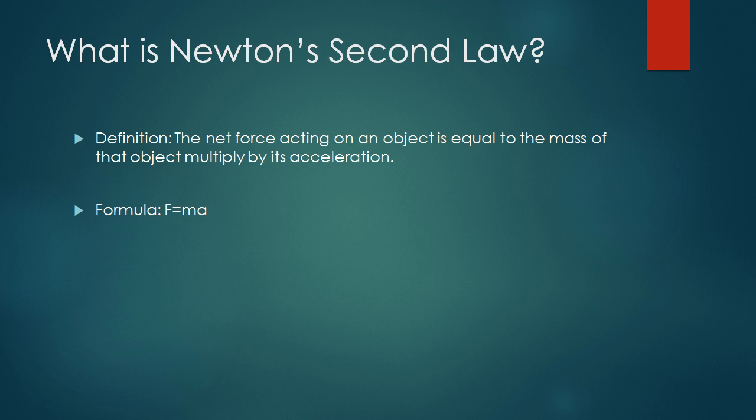What is Newton's second law? Well, the definition for his second law is that the net force acting on an object is equal to the mass of that object multiplied by its acceleration. This leads to a very simple formula known as F equals M times A.